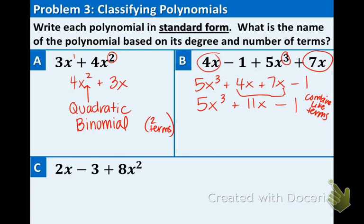Now, what is this called? Well, first of all, this is degree 3, so that's going to be a cubic function. And there are three terms total, 1, 2, 3, so therefore it's a trinomial. So this is called a cubic trinomial.